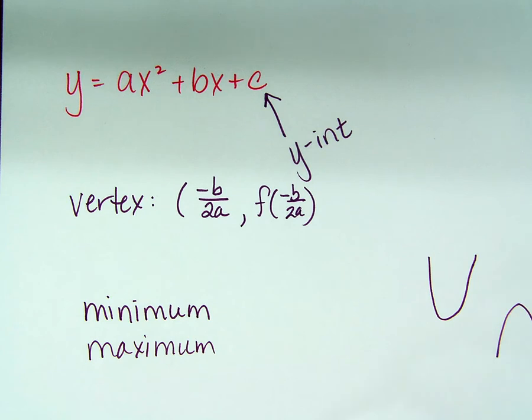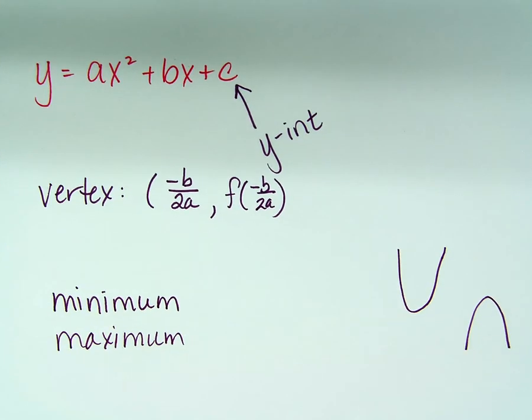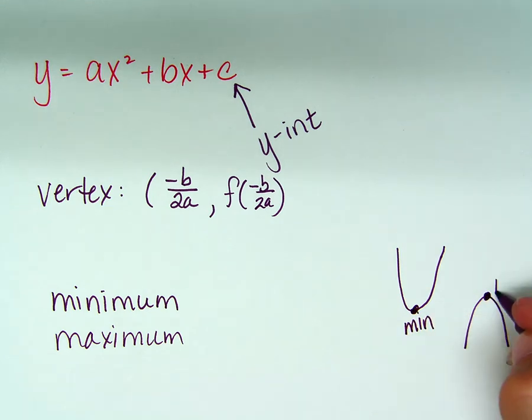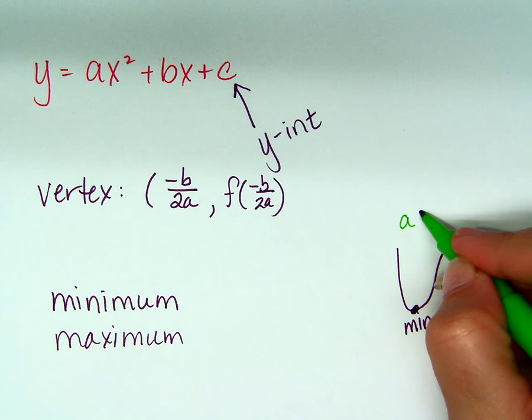Well, does it open up or does it open down? If it's opening up, this is going to be a what? A minimum. And if it's opening down, a max. And how do you determine by looking at an equation whether it opens up or down? Do you remember? That's perfect.